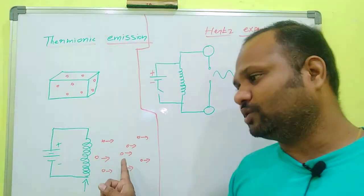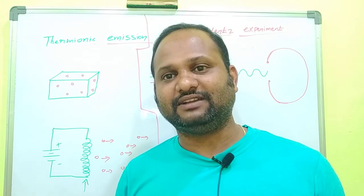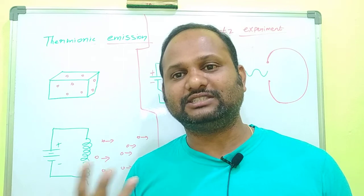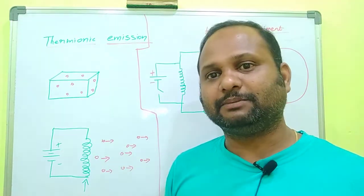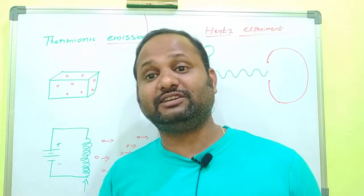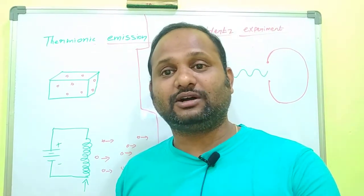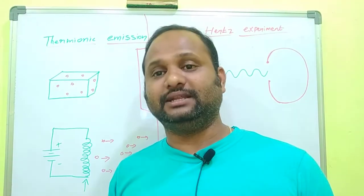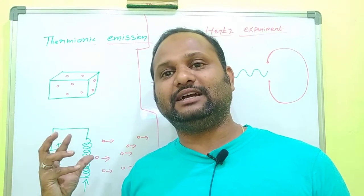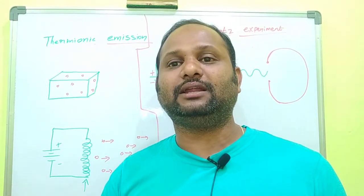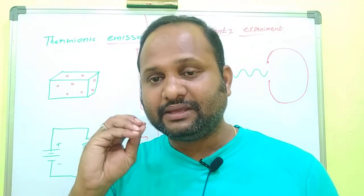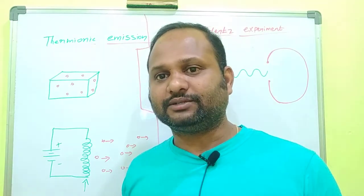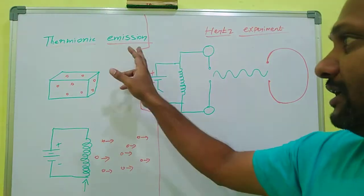The intensity of electron emission means the number of electrons emitted per second. The number of electrons emitted depends upon the nature of the material and the temperature applied. It is not constant for all metals — it is different for different materials. So the intensity of electron emission depends upon both the nature of the material and the temperature applied. These are the two things which control the electron emission.